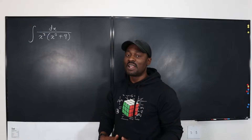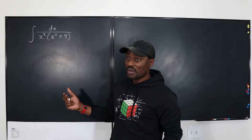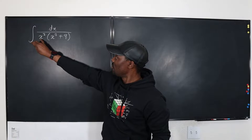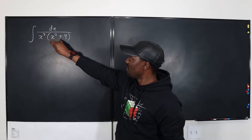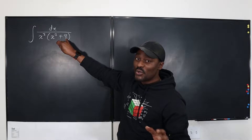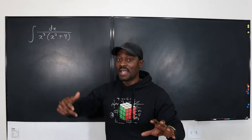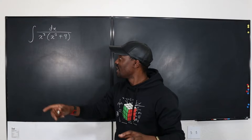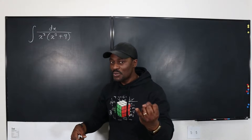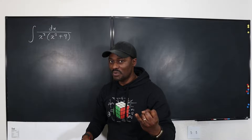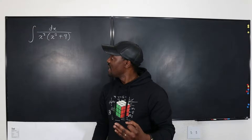Trig substitution, at this level, will not work, because if I distribute this here, it's going to become x to the fourth, and there's still x on this side. And usually for trig substitution, you want a constant and a variable — you don't want the variable to also be on the other side. So u-substitution wouldn't work, and trig substitution will not work.